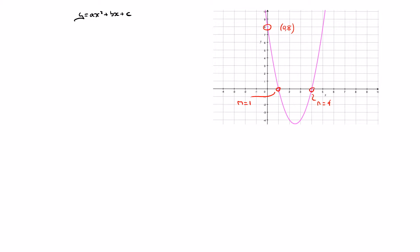What root factoring tells us is that since this parabola has two x-intercepts, its equation can be factored as y equals a times x minus m times x minus n, where m and n are the two values of the x-intercepts. Those were m equals one and n equals four.